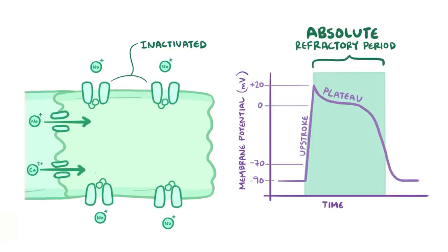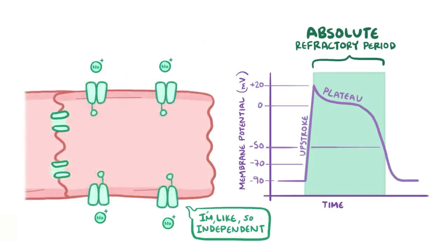Now, there are a ton of sodium channels on each myocyte, and each sodium channel operates independently, but overall most of them stay inactivated after the upstroke, through the plateau phase, and until the cells repolarize to about negative 50 millivolts, at which point some channels start to recover, and this is the point when the cell would respond to a stimulus.